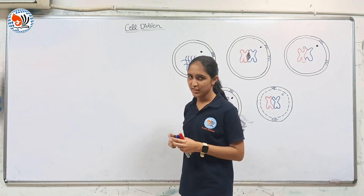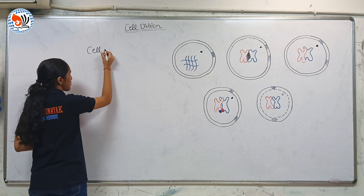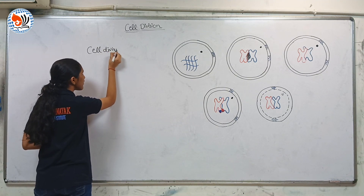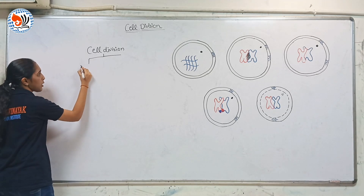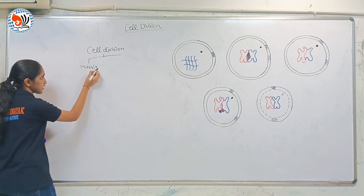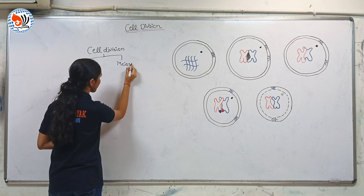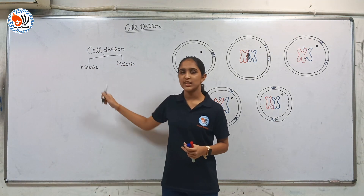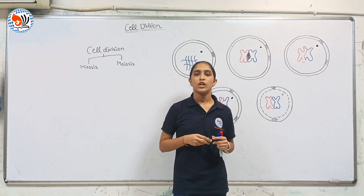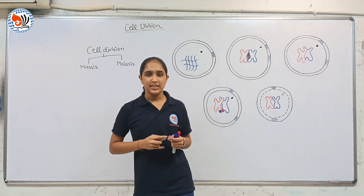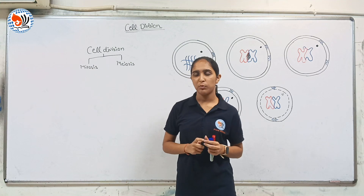Today we will see the third topic: cell division. There are two types — mitosis and meiosis. Mitosis occurs in somatic cells and it is equational division, producing diploid daughter cells from a parent cell. Meiosis occurs in germ cells and it is reductional division, also producing daughter cells from a parent cell.